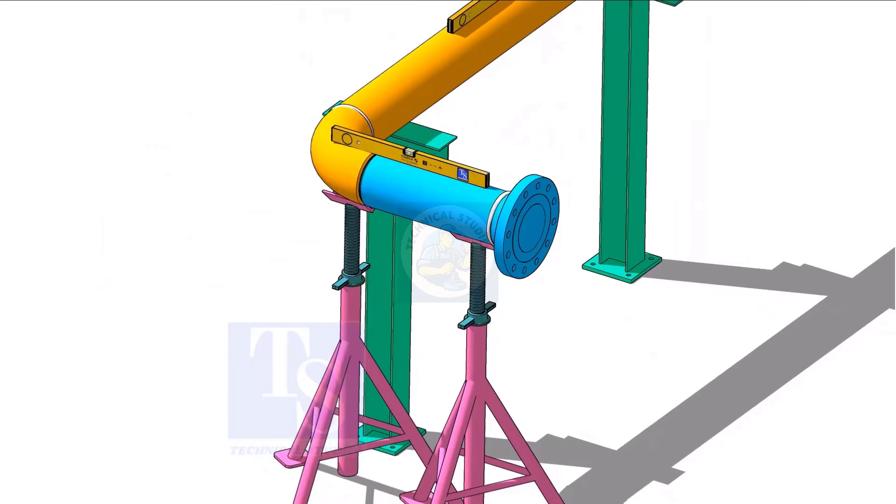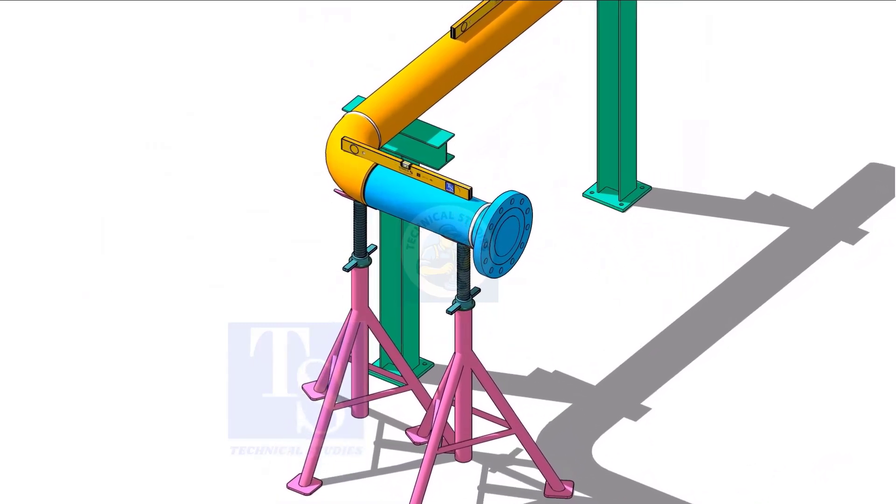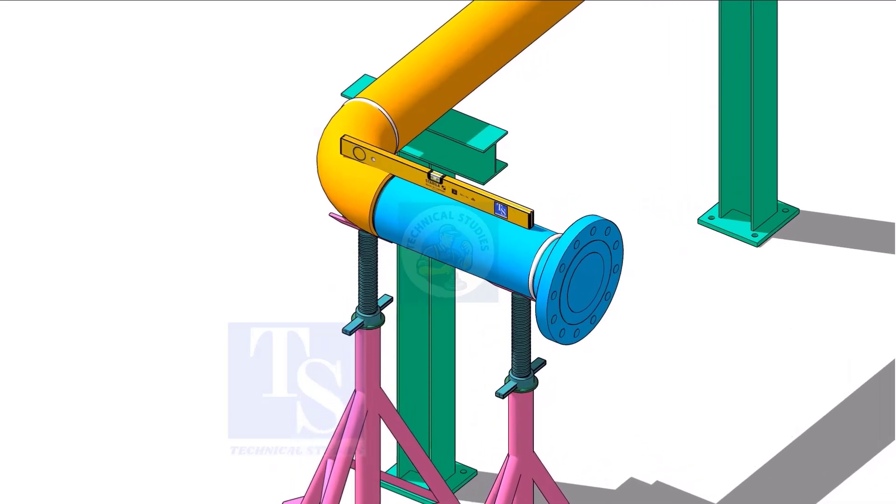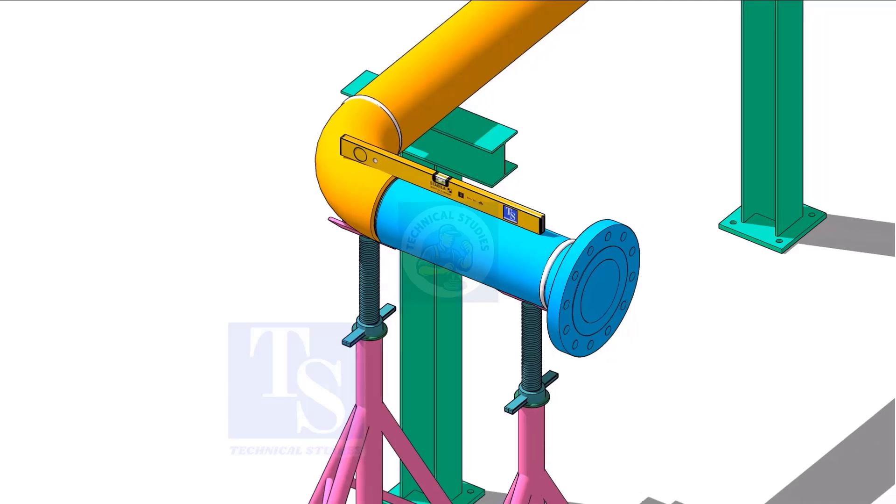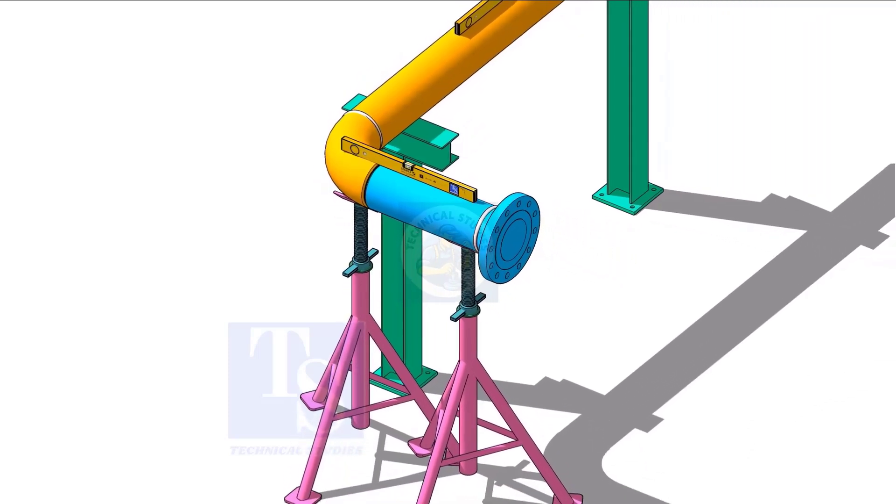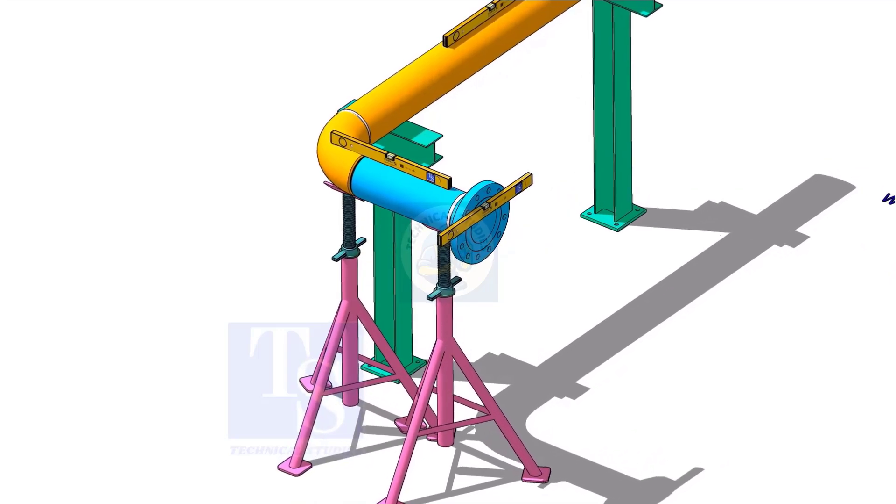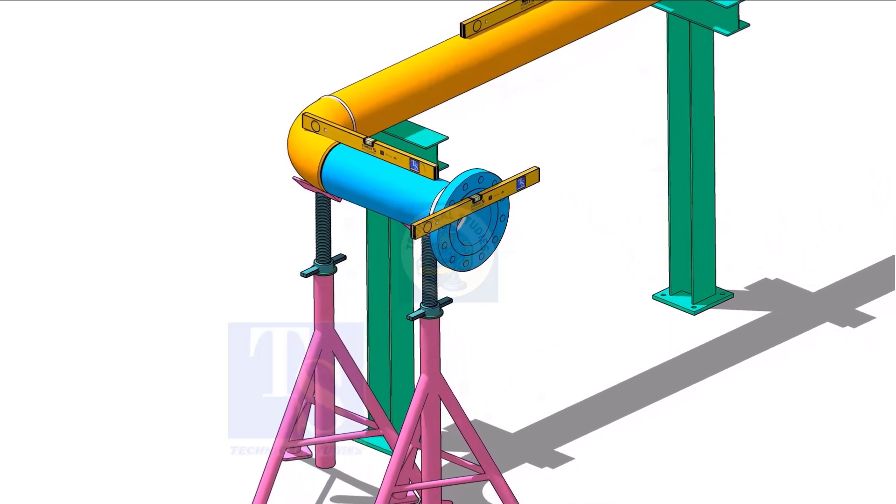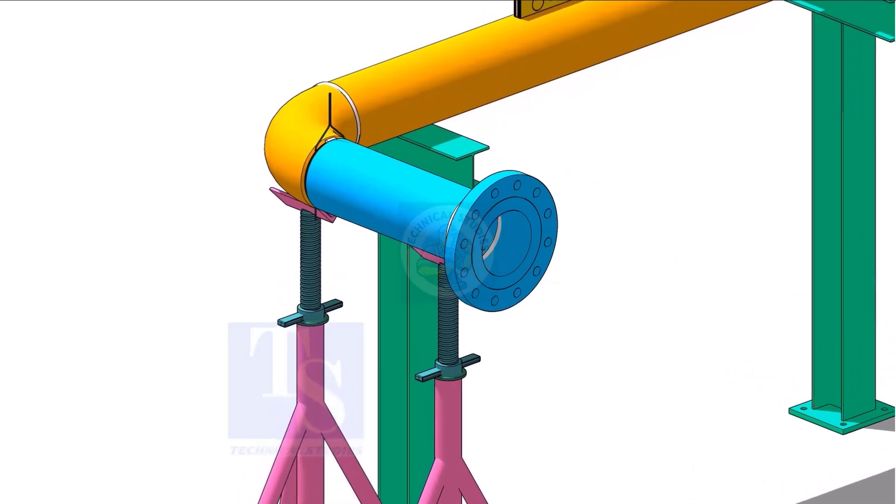Put spool number 2 in its position and level it. Correct the whole plumbness and tack weld on the top and bottom side of the joint.